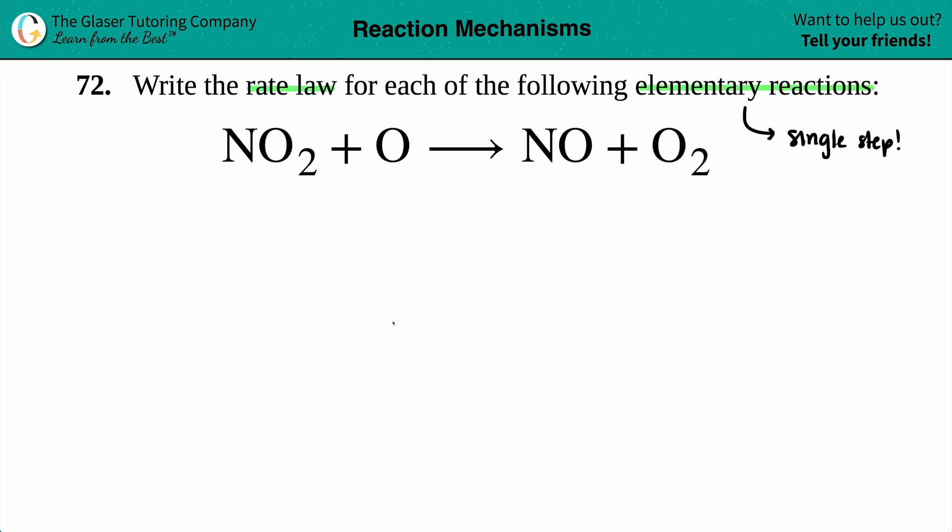Now, the good thing is that if we do have elementary reactions or elementary steps, the rate law is going to look pretty similar to the rate law that you know, right, if you had an overall reaction, but just one little difference. And the rate law for elementary reactions is this. Now, it looks all the same, right? Rate equals K. So rate equals the rate constant times the concentration of the reactants. Nobody cares about the products.